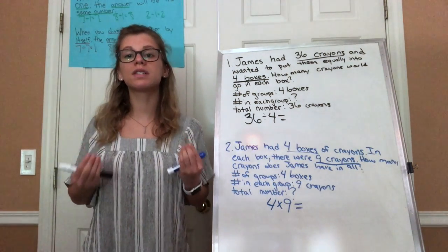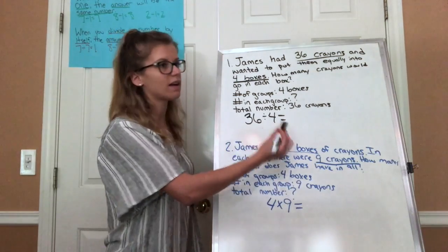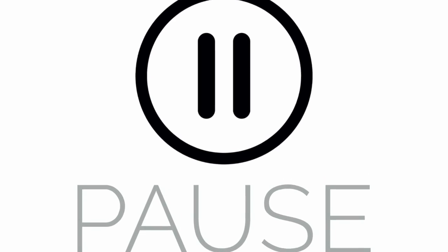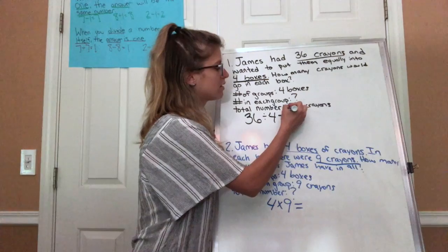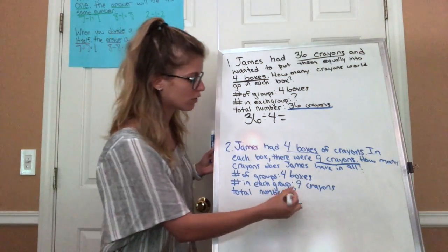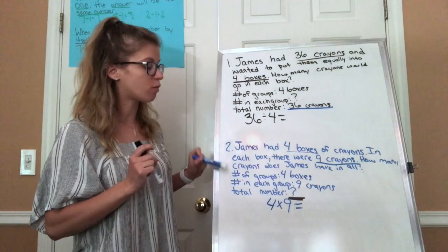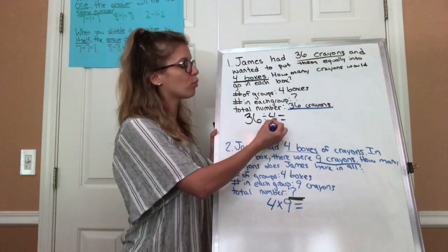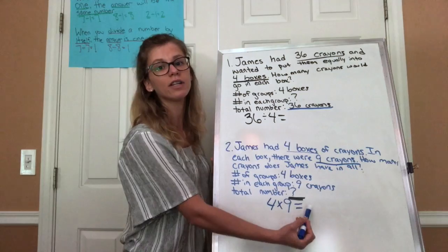Think about what was the same and different, and how did you decide whether to multiply or divide. What you could have noticed is that in our division problem we already had our total, but what's different about our second problem is that we were trying to figure out the total — that was our unknown. So in one problem we had the total and in the other problem we didn't have the total.